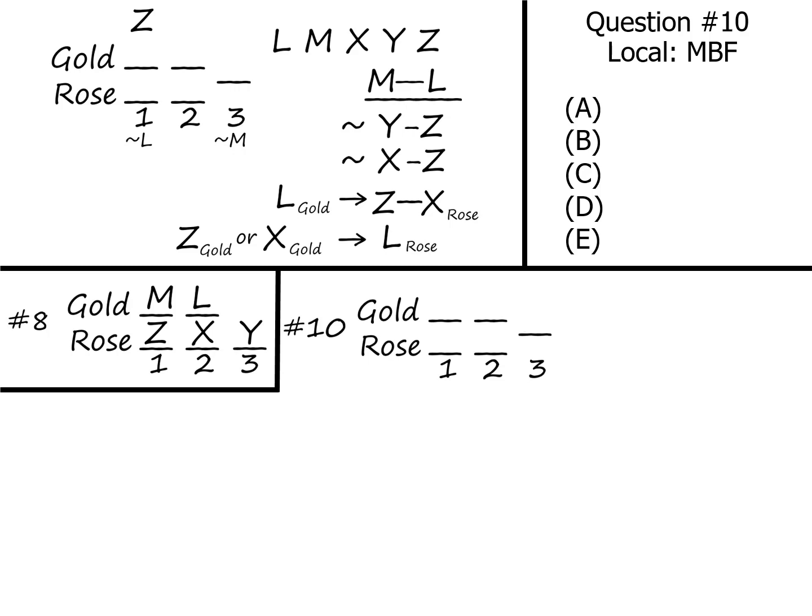Begin by sketching your slots and put X into that slot. Now once we have the 3 p.m. slot filled, we know that M and L are going to have to fill up the two remaining slots in some room. We don't know if that's going to be the gold or the rose room, but they're going to be forced to be 1 and 2 in whatever room they're in.